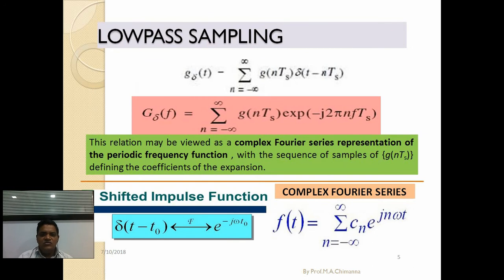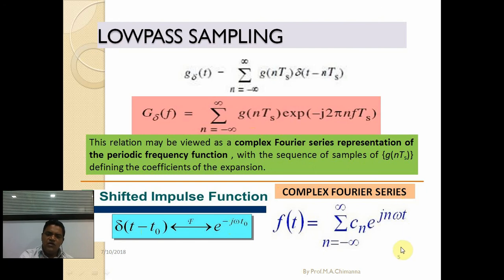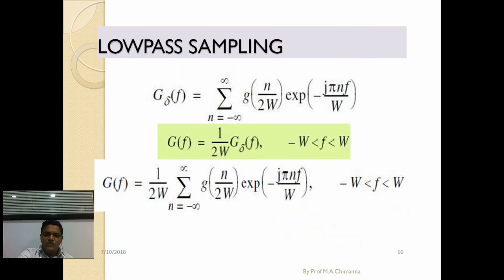For low pass sampling, g_delta(t) equals the summation from n = minus infinity to plus infinity of g(n·T_s) times delta(t minus n·T_s). This relationship is given in the complex Fourier series representation of the periodic frequency function, with frequency of the sample g(n·T_s) defining the expansion coefficients. The shifted impulse function delta(t minus t_0) is e^(−jωt₀), given in the complex Fourier series with frequency range minus W to plus W.